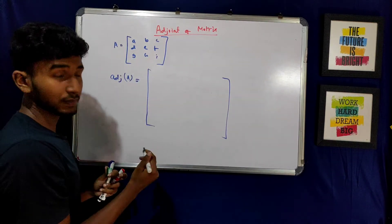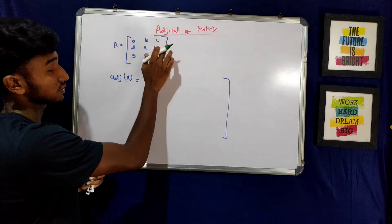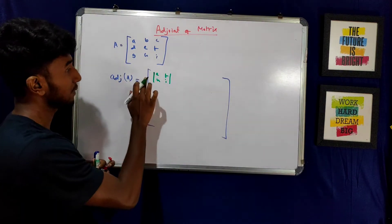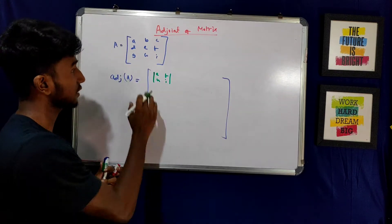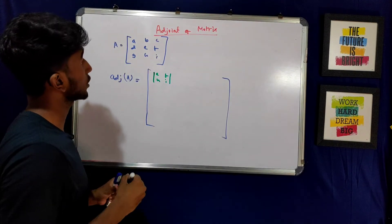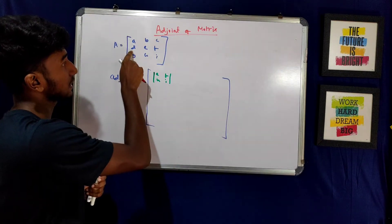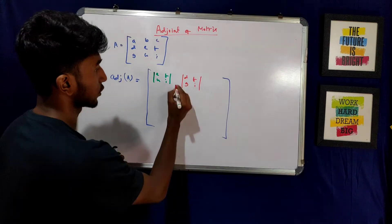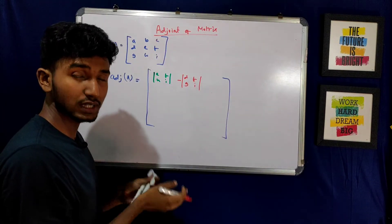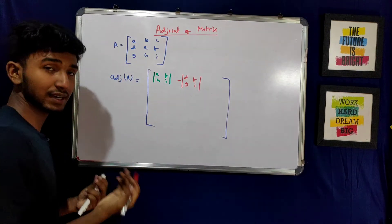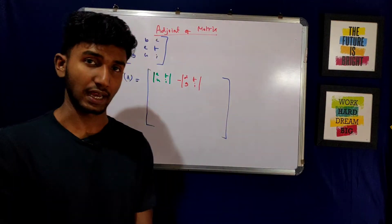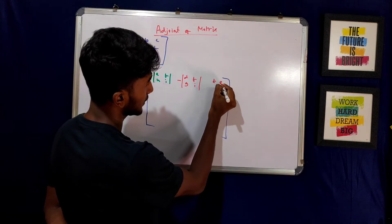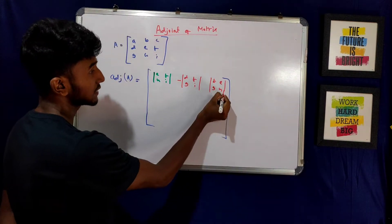We will check cofactor A at first row, first column — we use E, F, H, I. This is a determinant. A is at position plus. We check cofactor B at first row, second column — we use D, F, G, I. B is at 1,2 position, so the positional sign is minus. Next, cofactor C at first row, third column — we use D, E, G, H. C is at position plus.